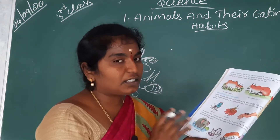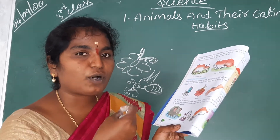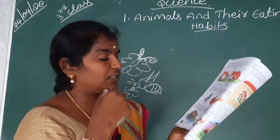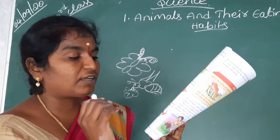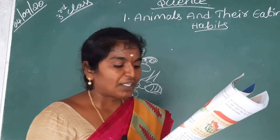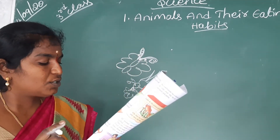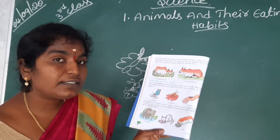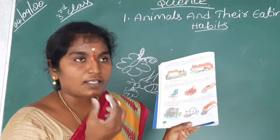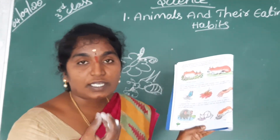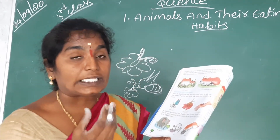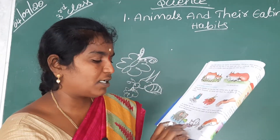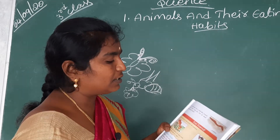Cats and dogs use their tongue to lick and lap up milk and water. Here we are shown a cat and a dog and how they eat food using their tongue. They use their tongues to feed.